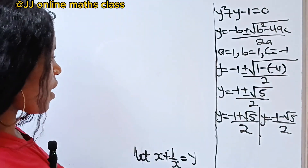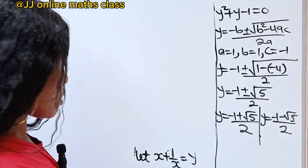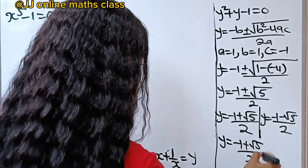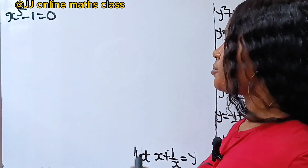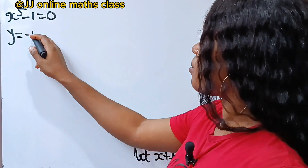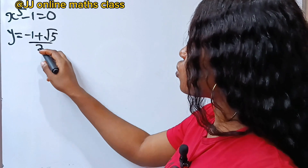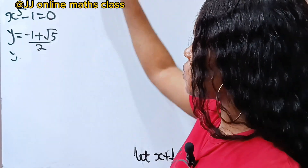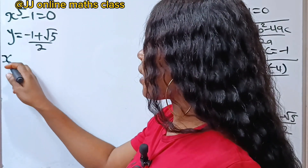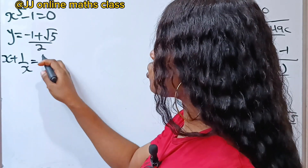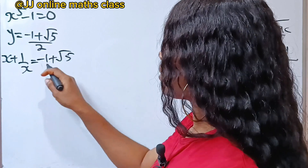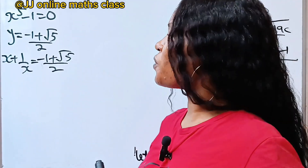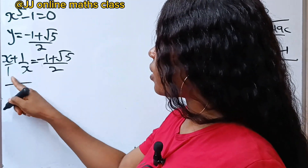Recalling that y equals x plus 1 over x. For the first case where y equals minus 1 plus root 5 over 2, we write x plus 1 over x equals minus 1 plus root 5 divided by 2. Solving the left-hand side, the LCM of 1 and x is x, giving us x squared plus 1 over x.